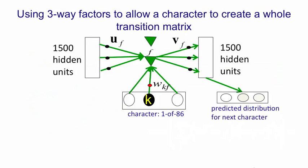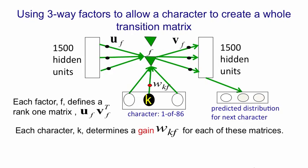So here's a picture of the whole system. We have a number of factors, in fact we'll have about 1500 factors, and the character input is different in that only one of those is active, so there'll only be one relevant weight at a time. And that weight from the current character K, which is called W_KF, is the gain that's used on the rank one matrix got by taking the outer product of U and V. So the character determines a gain, W_KF. You multiply the rank one matrix, UV, by that gain. You add together those scaled matrices for all the different factors, and that's your transition matrix.